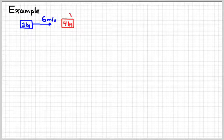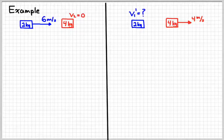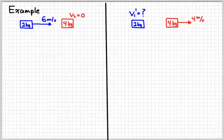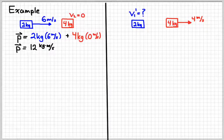So let's look at an example. You have a two kilogram object going to the right at six meters per second, and it collides with a four kilogram object which is initially at rest. You need to know some information after the collision. Suppose the four kilogram object after the collision moves to the right at four meters per second, and our job is to figure out the new velocity of the first object. We start by finding the momentum of the system, which is 12 kilogram meters per second.